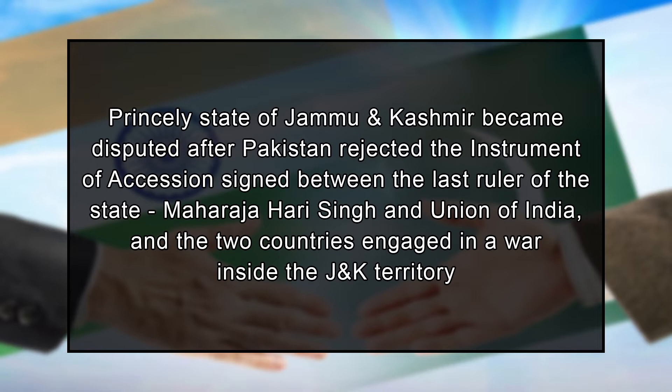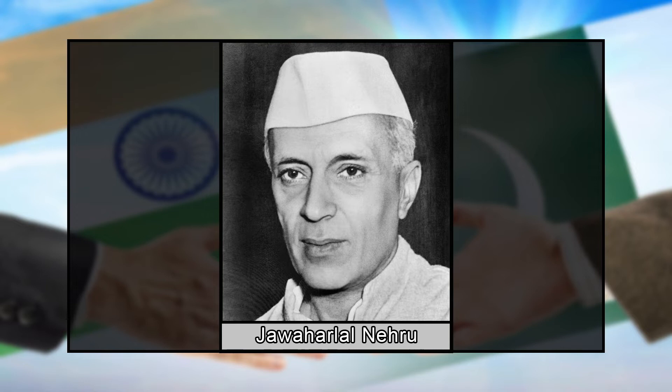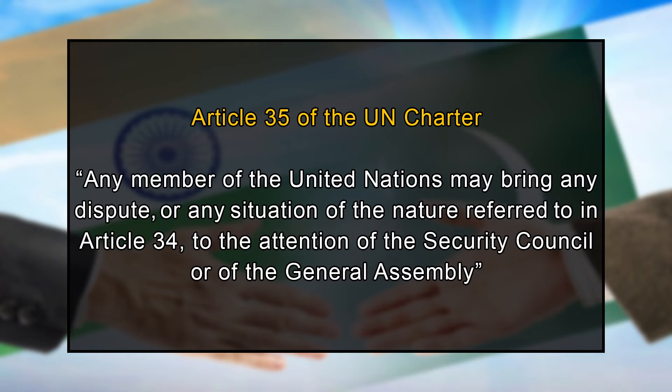International mediation efforts on the Kashmir issue began when the princely state of Jammu and Kashmir became disputed after Pakistan rejected the instrument of accession signed between Maharaja Hari Singh and the Union of India. In January 1948, the Government of India under Jawaharlal Nehru referred the case to the United Nations Security Council pursuant to Article 35 of the UN Charter, which allows any member to bring any dispute or situation to the attention of the Security Council or General Assembly.